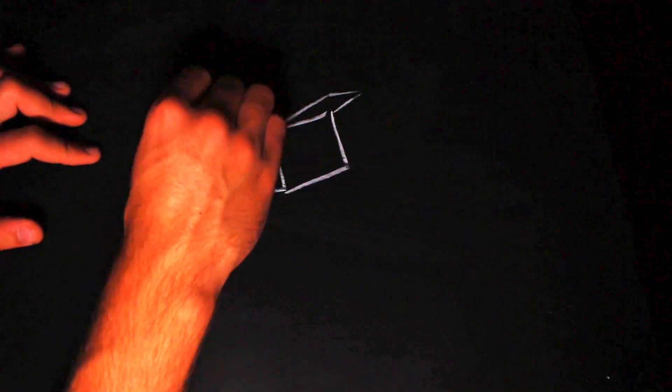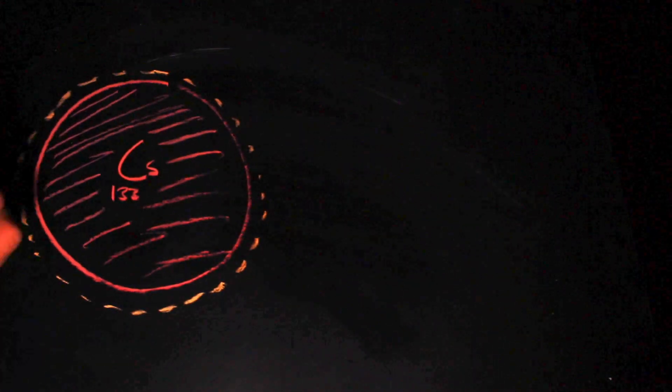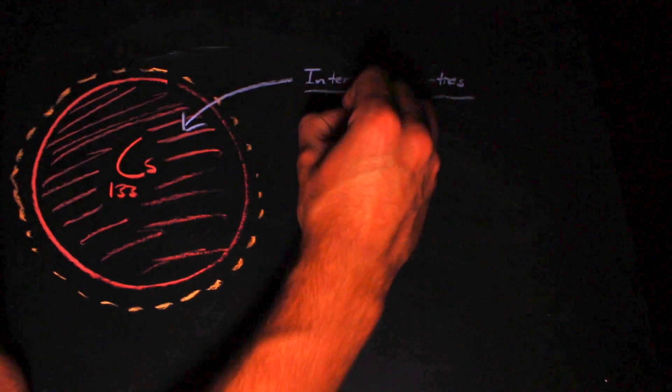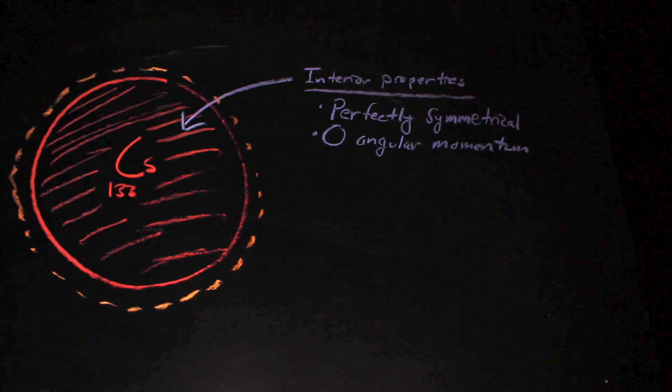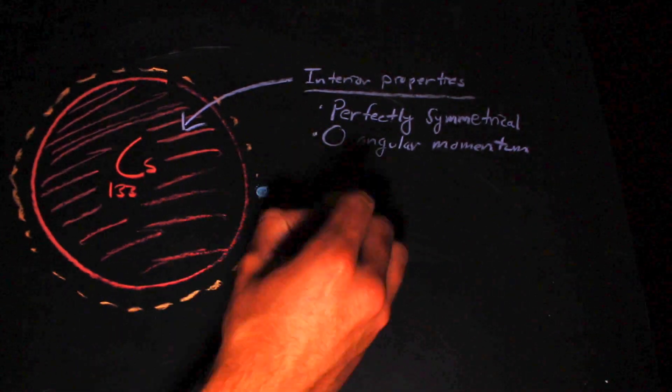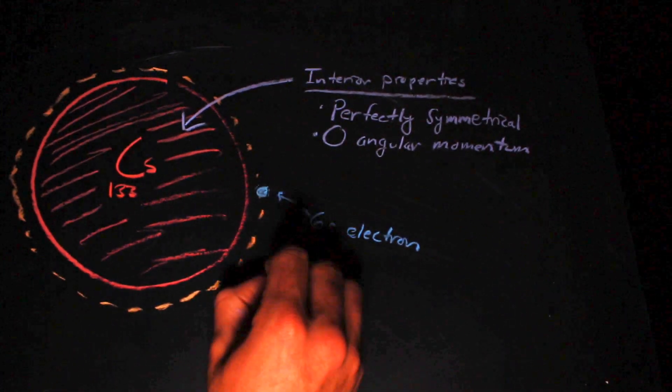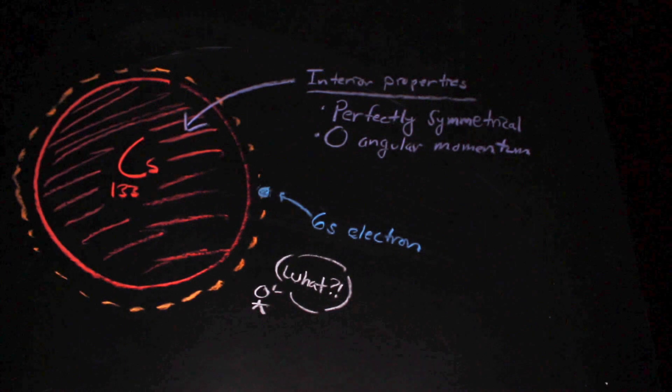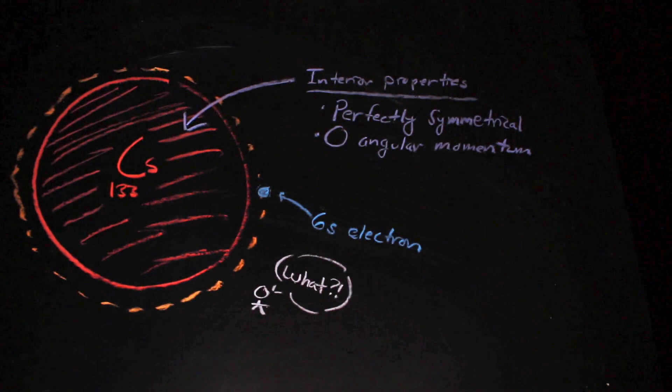We should probably unpack that definition just a little bit. Cesium is used because its atomic structure is pretty sweet. In particular, the inner shell of a cesium atom is similar to xenon, meaning it is perfectly symmetrical and has zero angular momentum. Therefore, the lone electron that falls on the outer shell has no fine structure, which actually means something to a physicist, but we're not going to worry about that in this video.